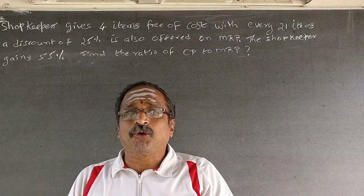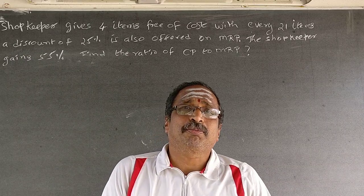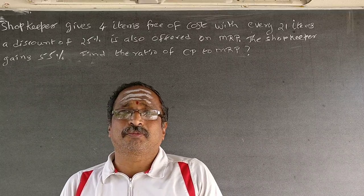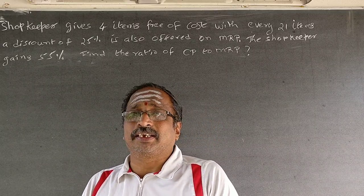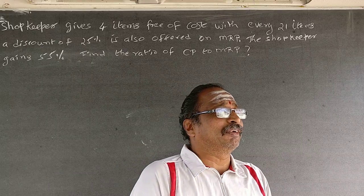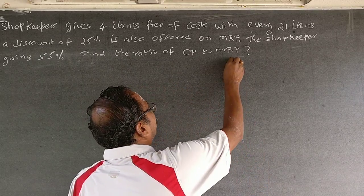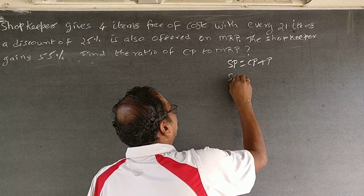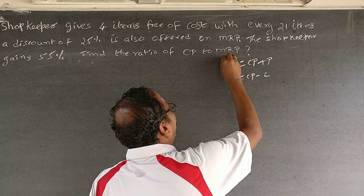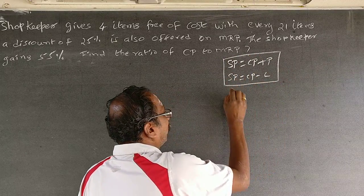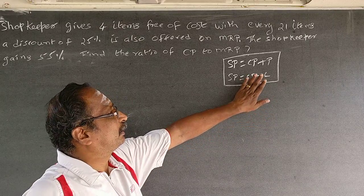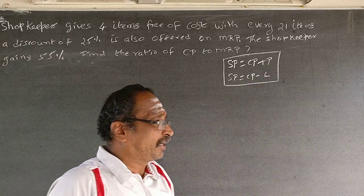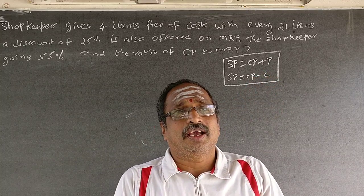This problem is known as a cost price and selling price problem — some call it a profit problem. The fundamental rule is: selling price equals CP plus profit when you make a profit, and selling price equals CP minus loss when you make a loss. This is the bible for all cost price and selling price problems — nothing more than this.